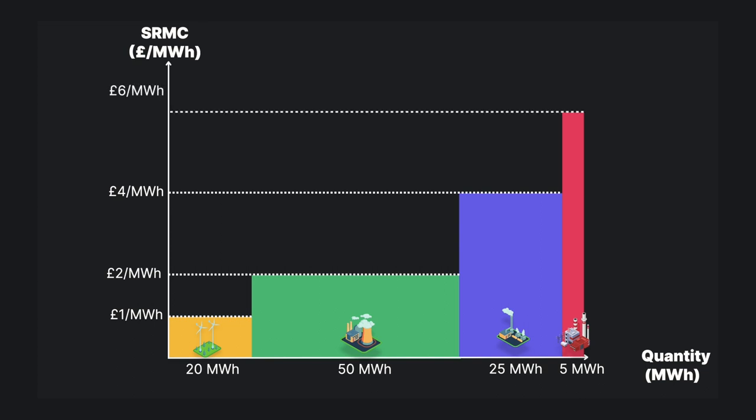So, taken together, all these generators, each with their own short run marginal cost, make up our generation stack. Wind is cheapest at £1 per megawatt hour, nuclear is next at £2, gas turbines at £4, and our gas peaking plant is most expensive at £6 per megawatt hour. In the next episode, I'll explain how my new generation stack interacts with demand.